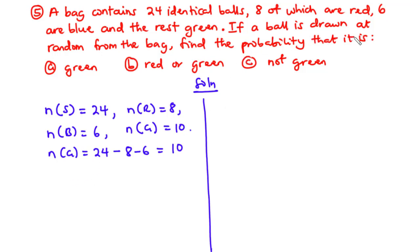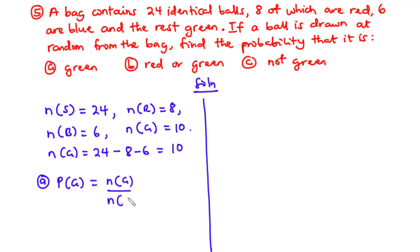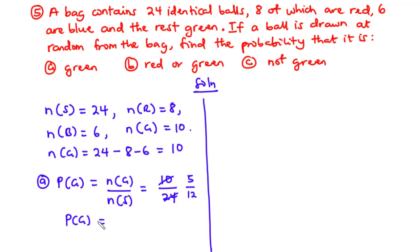If a ball is drawn at random from the bag, find the probability that it is green. The probability that a green ball is drawn is given by the number of green balls divided by the total number of balls: 10 divided by 24. Simplifying, 2 goes into 10 five times and into 24 twelve times, therefore the probability of green is 5 over 12.